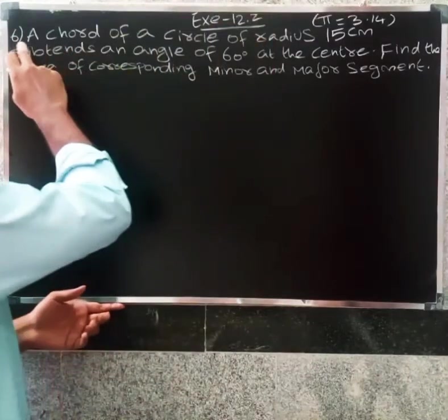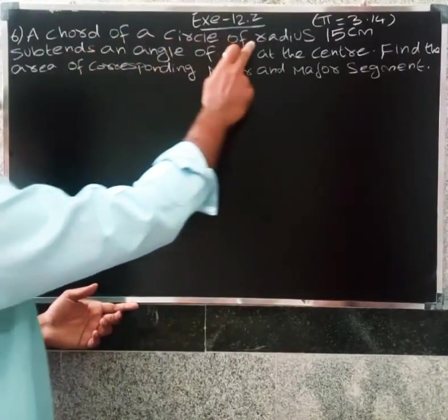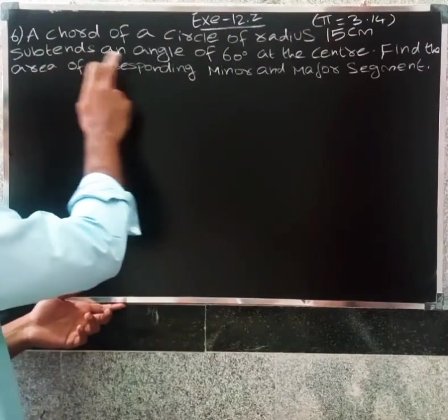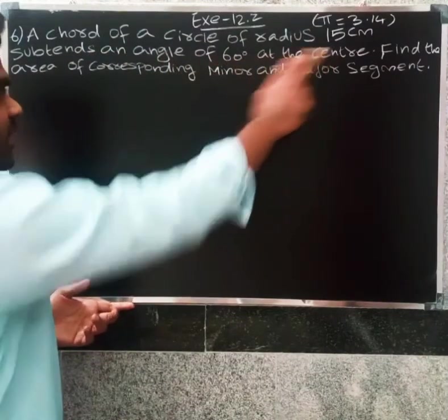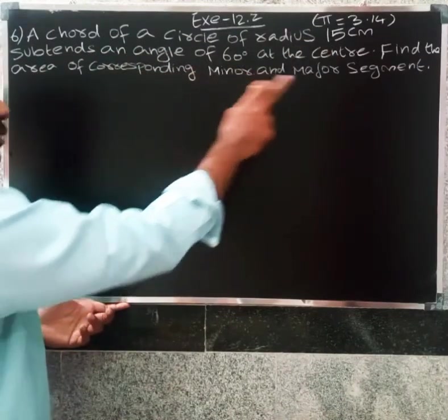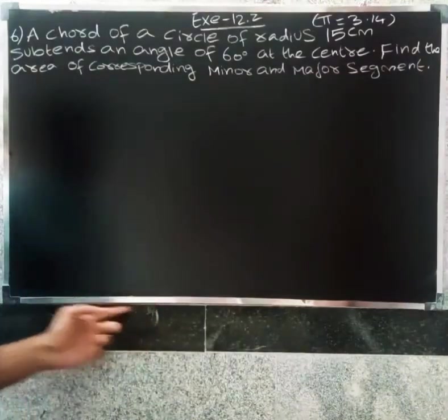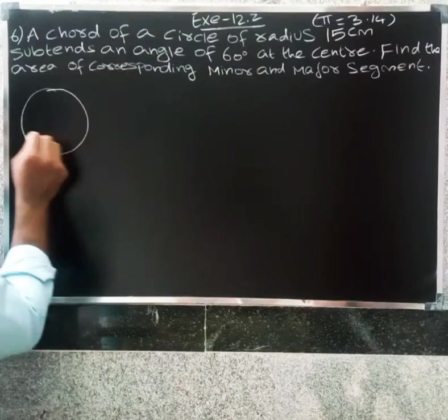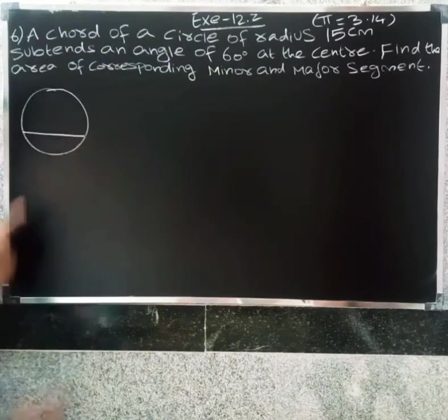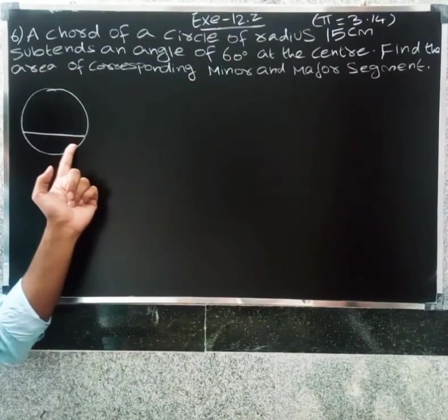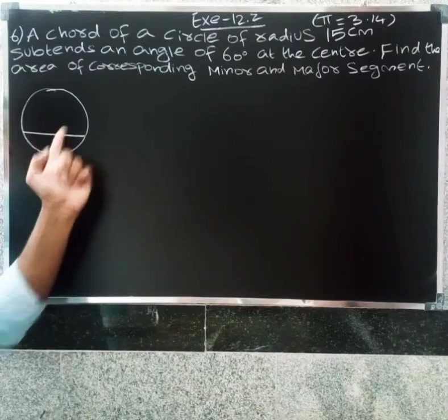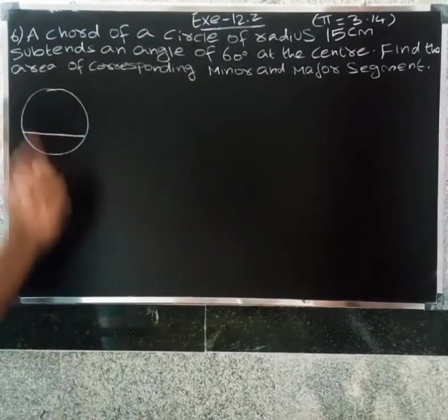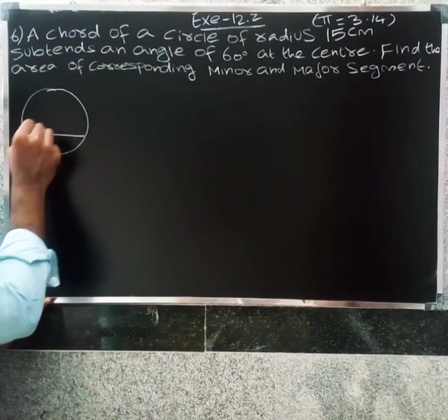Question 6: A chord of a circle of radius 15 centimeters subtends an angle of 60 degrees at the center. Find the area of the corresponding minor and major segments. So the chord of the circle, the full line in the center part of the chord. A chord of a circle of radius 15 centimeters subtends an angle of 60 degrees at the center.